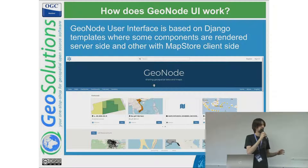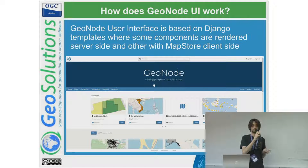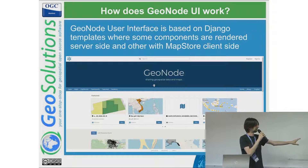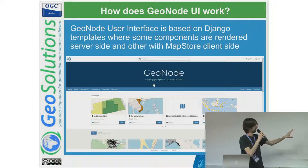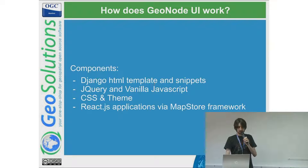The home page is composed by different pieces. Some of them are rendered server-side through the Django template engine, and some through React provided by MapStore. The resource cards are coming from the MapStore integration, while the header and other components are static HTML rendered from the Django template engine.